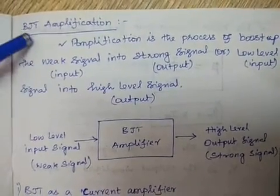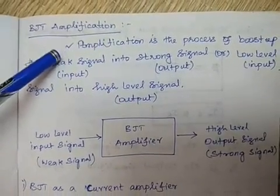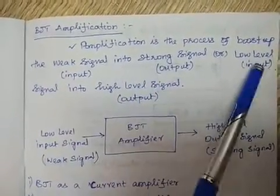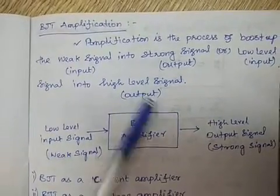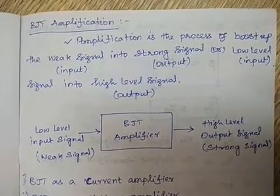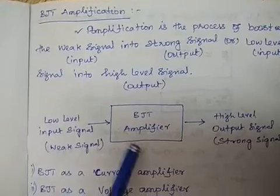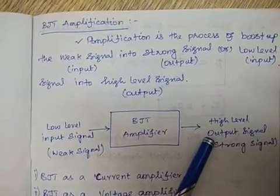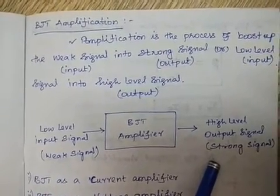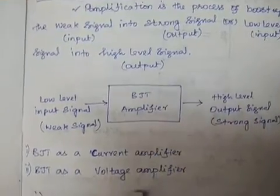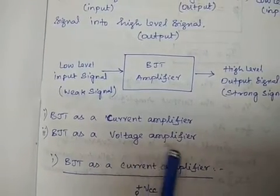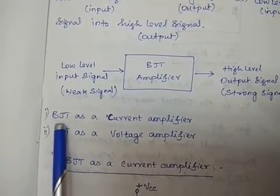Today we are going to discuss BJT amplification. Amplification is the process of boosting a weak signal into a strong signal, or a low-level signal into a high-level signal. Amplification means increasing the amplitude level of the input signal. There are two types of amplification we are going to discuss: first is current amplification, and next is voltage amplification using a BJT transistor.